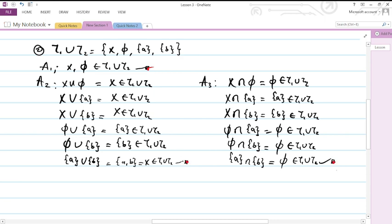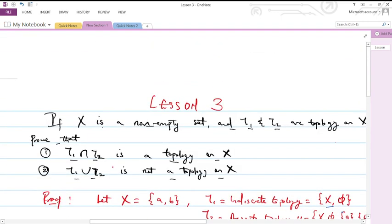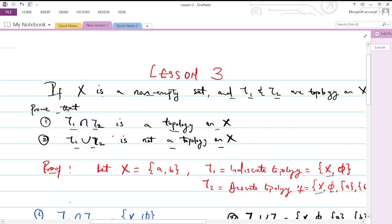So all three axioms are satisfied. This is satisfied, this is satisfied, and this is satisfied. I can conclude that, therefore, T₁ ∪ T₂ is a topology on X. And that negates what I had to prove.